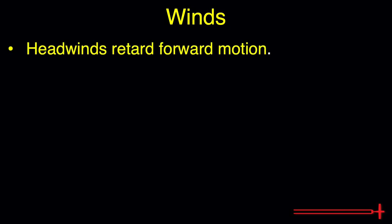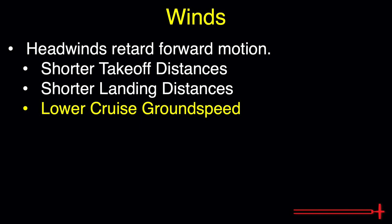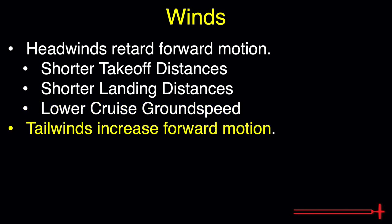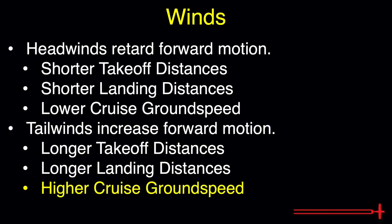Winds are also discussed in great detail in our video over the subject. For the purpose of this video: headwinds retard the aircraft's forward motion, resulting in shorter takeoff distances, shorter landing distances, and lower ground speed during cruise. Tailwinds do the opposite, carrying the aircraft more rapidly through the atmosphere — increasing takeoff distance, landing distances, and cruise ground speed. Headwinds make us slow, tailwinds make us fast, and crosswinds make us sweaty. This concludes today's video covering the effects of atmospheric conditions on aircraft performance.